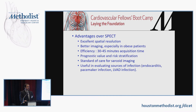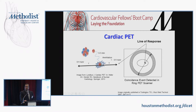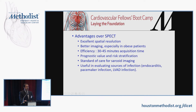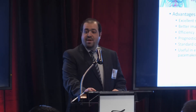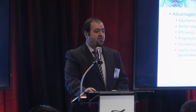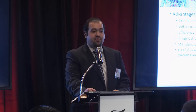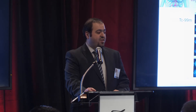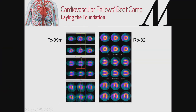PET — positron emission tomography — uses three tracers: rubidium, N-13 ammonia, or O-15 water. The same concept applies: imaging the decay of injected tracers through a PET camera. Advantages over SPECT include much better spatial resolution, better imaging especially in obese patients, and a much shorter acquisition time — a whole study in 30 minutes. There is a multitude of prognostic and risk stratification data using cardiac PET. Compared to technetium SPECT, rubidium PET provides better definition, spatial resolution, and count density.